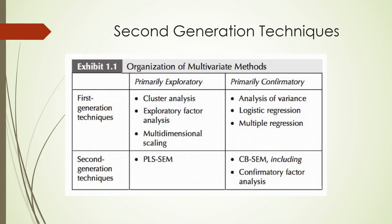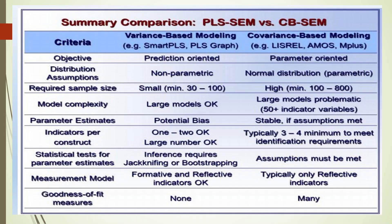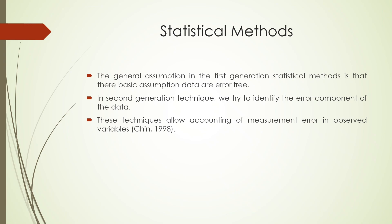The basic assumption was that errors are normally distributed or the assumption was that data is free of error. But in case of second-generation technique which is covariance-based SEM or Smart PLS, we try to identify the error component of the data and these techniques allow accounting of measurement error in observed variables.